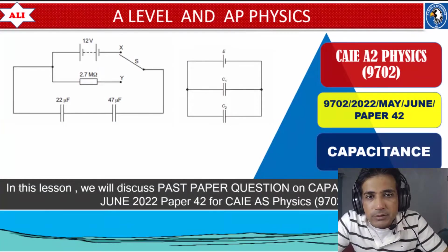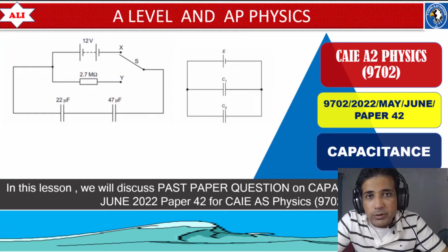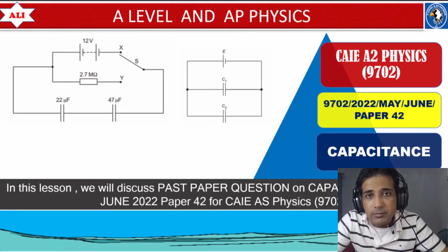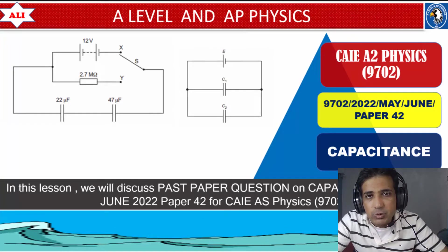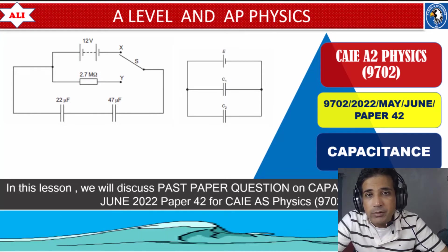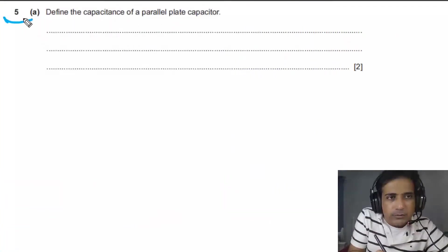Welcome to A-level and AP Physics. In today's lesson we will discuss a question on capacitance from May/June 2022 Paper 4 Variant 2. We will cover how to calculate combined capacitance for capacitors connected in series and in parallel, how to calculate energy stored in a capacitor, and how to calculate discharging time for a capacitor. Let's study and improve together.